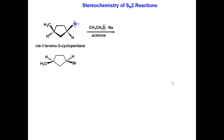First, let us determine the stereochemistry of the reactants. Since the hydrogens are going into the page, we can directly label the groups on the chiral atoms from highest to lowest priority. The chiral carbon bonded to the bromine is R, and the chiral carbon bonded to the methyl has an S configuration.